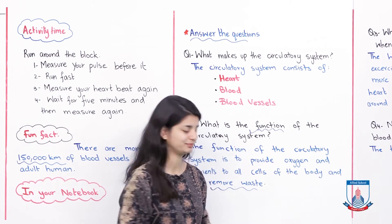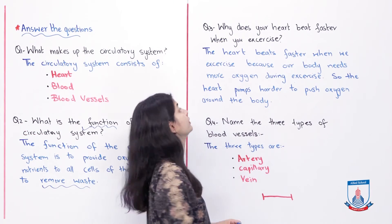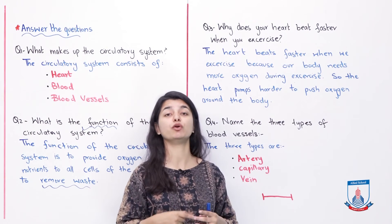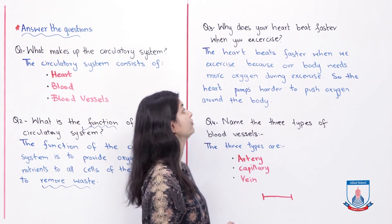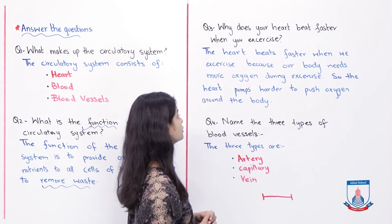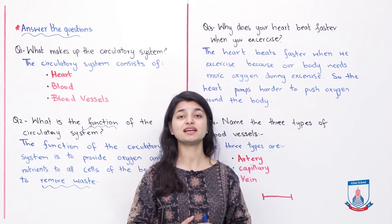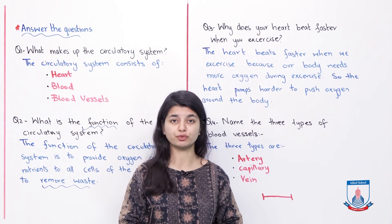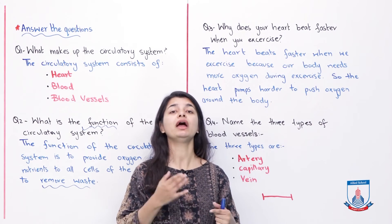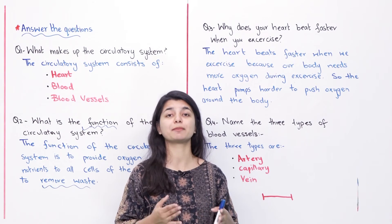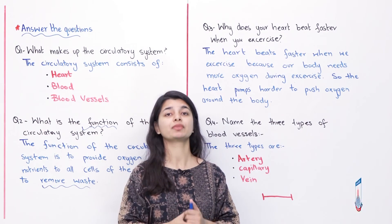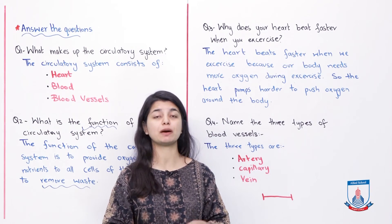Let's look at question number 3: Why does your heart beat faster when you exercise? We discussed this activity. The heart beats faster when we exercise because our body needs more oxygen during exercise. So the heart pumps harder to push oxygen around the body. When you exercise, your body needs more energy and oxygen, so the heart pumps faster. You can read it from here and write it in your notebook.